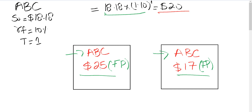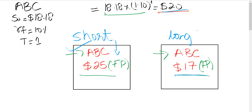Always remember: when the forward price is higher than the no-arbitrage price, as in this example, a person can earn arbitrage by taking a short position in that contract. Similarly, if the forward price is lower than the no-arbitrage price, the investor can earn arbitrage by taking a long position. Let's explore how you can earn arbitrage when you find a contract selling for a price higher than the no-arbitrage price.